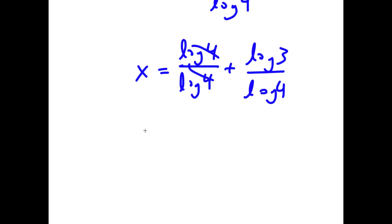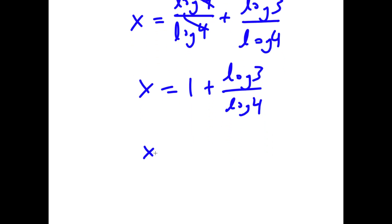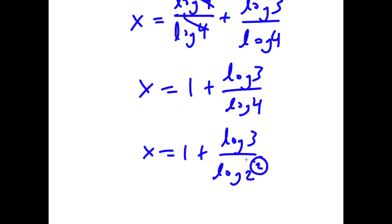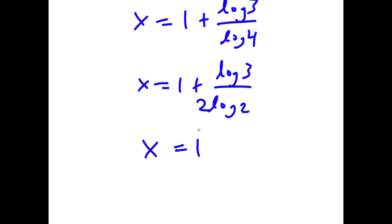Now, log 4 and log 4 — these two cancel out. So now I get x is equal to 1 plus log 3 over log 4. And log 4 is the same thing as 2 squared. So I get 1 plus log 3 over log of 2 squared. And I can move this 2 to the front. So now I have log 3 over 2 log 2. And this is the same thing as 1 plus 0.7925, which is equal to 1.7925.